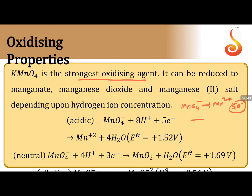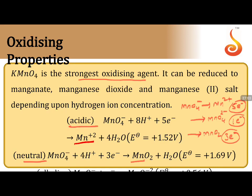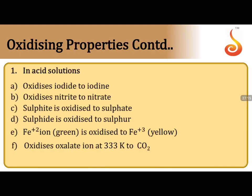Oxidizing properties of KMnO₄: In acid medium, MnO₄⁻ is reduced to Mn²⁺ (5 electrons, 5 Faraday). In highly basic medium, it changes to MnO₄²⁻ (1 electron). In neutral/faintly alkaline medium, it changes to MnO₂ (3 electrons, +7 to +4). Equivalent weights are calculated accordingly based on medium. In acid solutions, KMnO₄ oxidizes I⁻ to I₂, NO₂⁻ to NO₃⁻, SO₃²⁻ to SO₄²⁻, S²⁻ to S, Fe²⁺ to Fe³⁺, and C₂O₄²⁻ to CO₂.